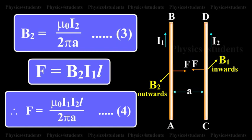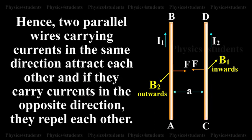These two forces given in equations 2 and 4 attract each other. Hence, two parallel wires carrying currents in the same direction attract each other, and if they carry currents in the opposite direction, repel each other.